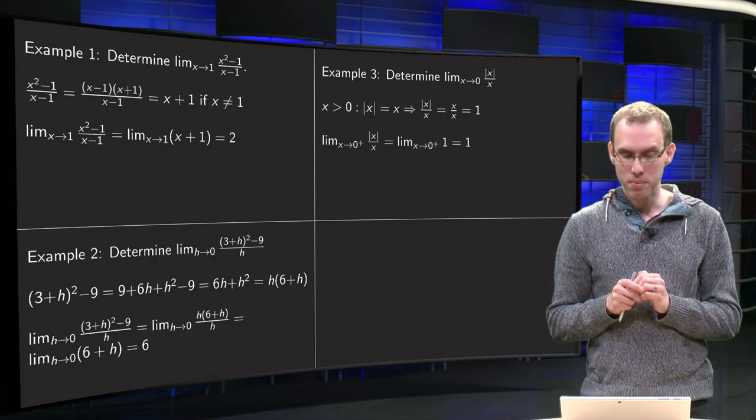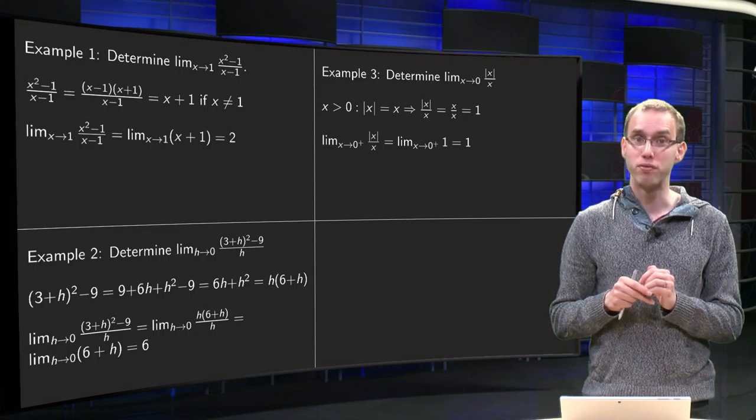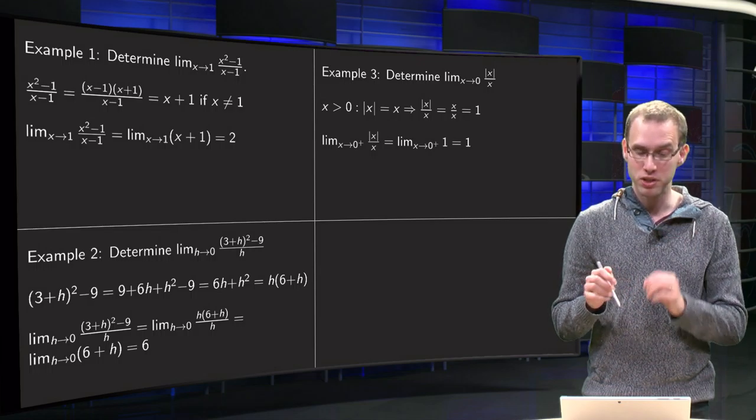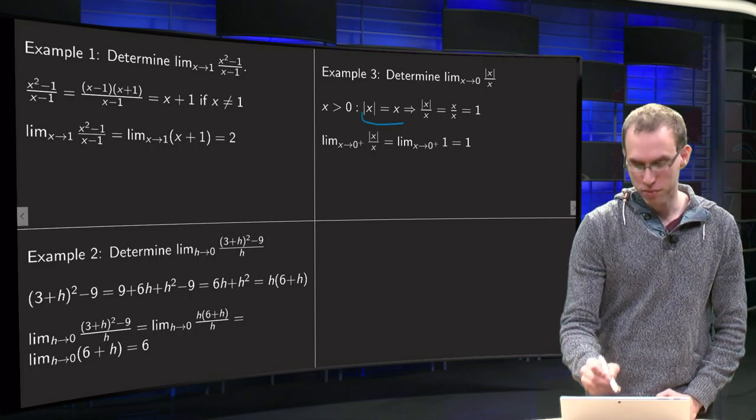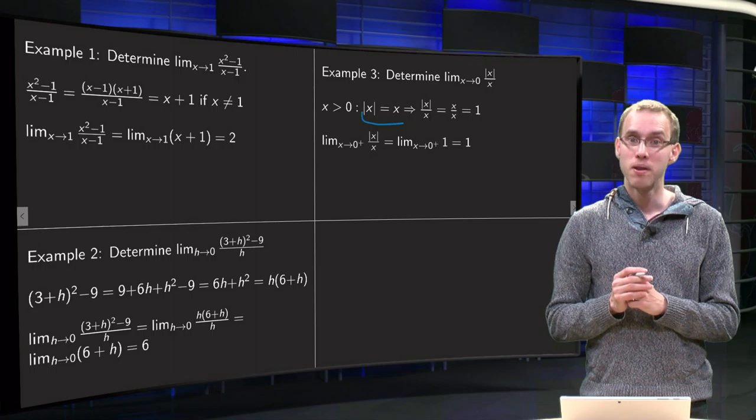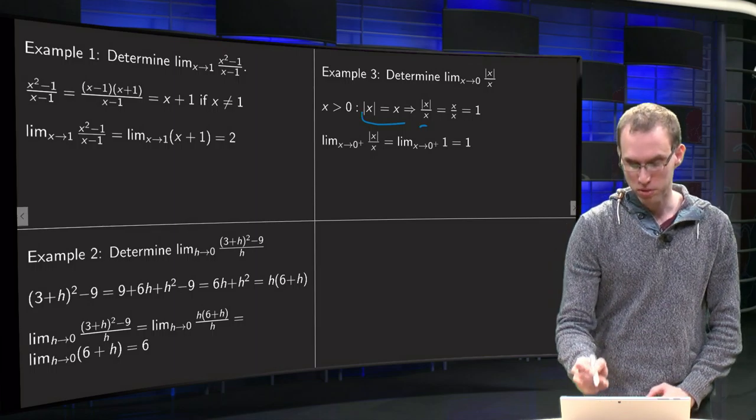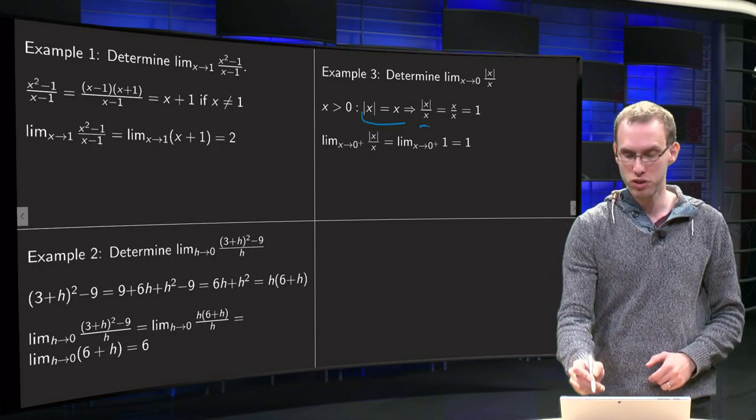Let's take the limit from above first. So, if x is positive, then the absolute value of x is x, and that means that our function x absolute value of x equals x over x equals just 1.